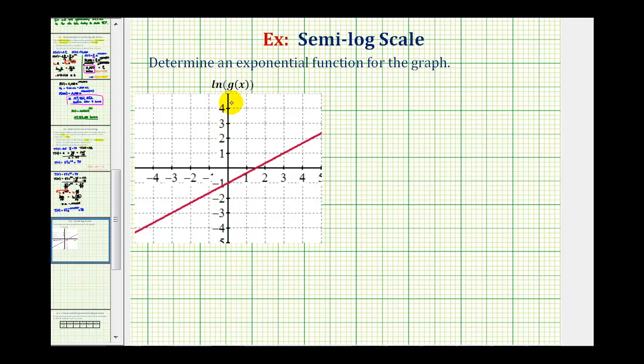If we ignore the fact that the y-axis is logarithmic, we should recognize that this line has a y-intercept of negative one. Then, if we use the y-intercept and this point here, we should be able to determine the slope of the line as well.